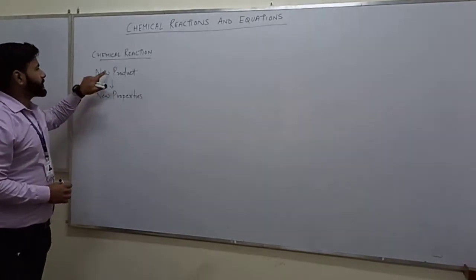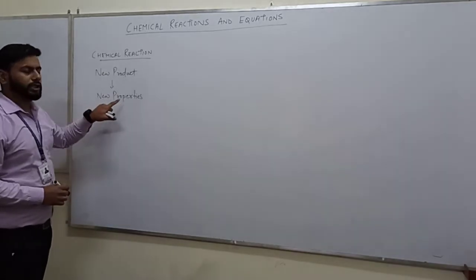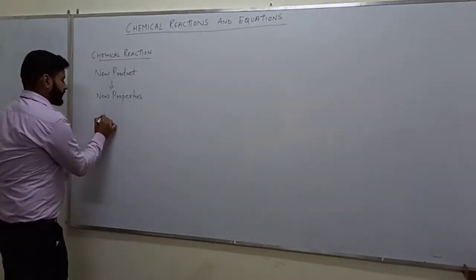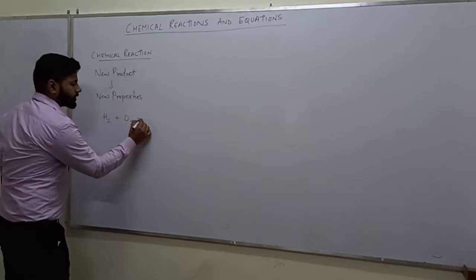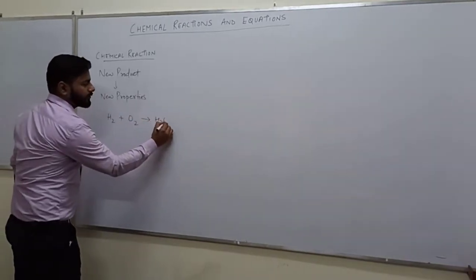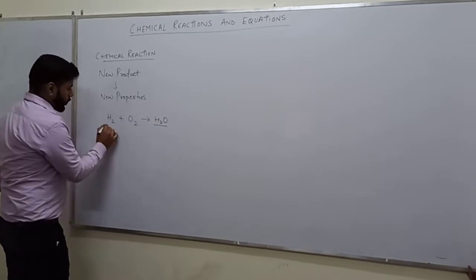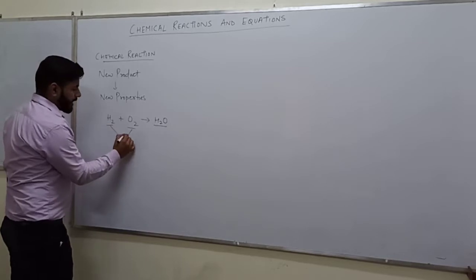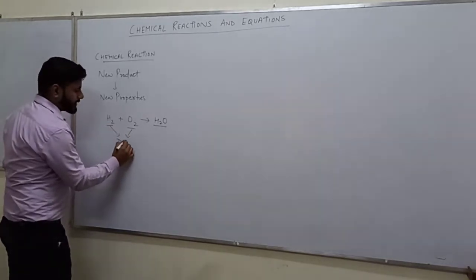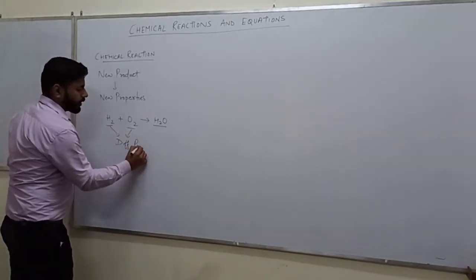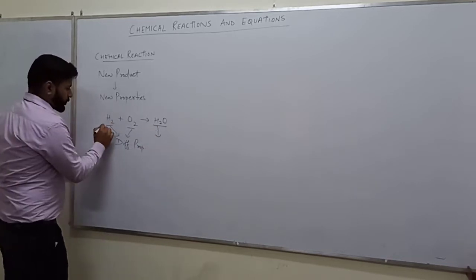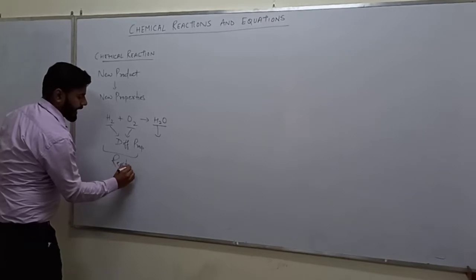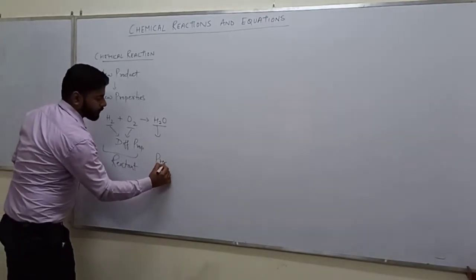A chemical reaction is basically a reaction in which new products with new properties are formed. For example, hydrogen and oxygen will react to form water. We know that these two are elements basically in gaseous form and they have entirely different properties as compared to that of water. Hydrogen and oxygen here are known as reactants and water is known as the product.